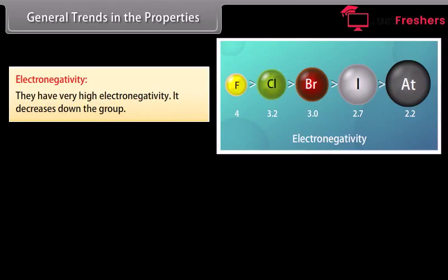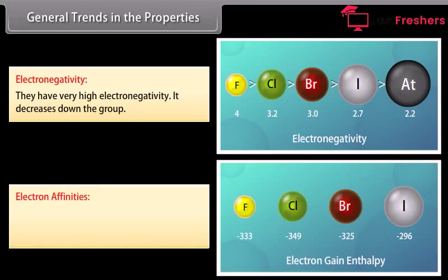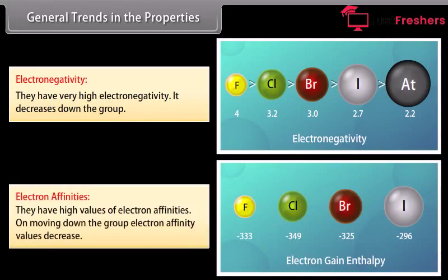Halogens have very high electronegativity, which decreases down the group. Fluorine is the most electronegative element in the periodic table. They have high values of electron affinities. On moving down the group, electron affinity values decrease because the size of the atom increases. A low value of electron affinity for fluorine is due to the small size of the fluorine atom; in the compact 2p subshell of fluorine, the added electron does not feel much attraction, resulting in a low value of electron affinity.